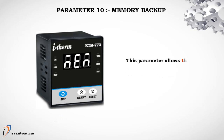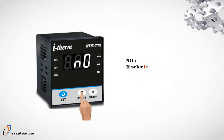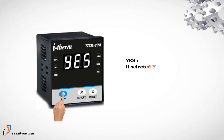Parameter 10: Memory Backup. This parameter allows the user to enable or disable the memory backup function. Not valid for cycle 3 mode. If selected no, there is no memory backup for the run time value. If selected yes, memory backup for the run time value is enabled.